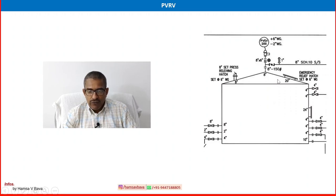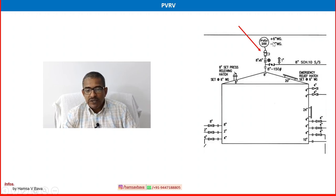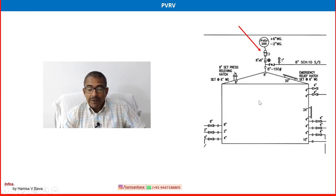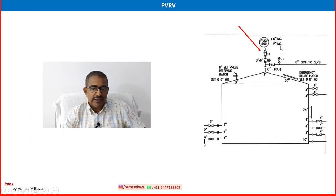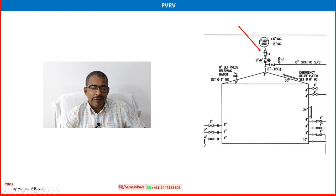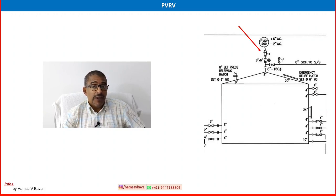Here is a P&ID of a simple storage tank showing a PVSV. Unlike a regular PSV which has only one set point, here you can see two set points: a positive set point of +6 inches water gauge for overpressure protection, and a vacuum set point of −2 inches water gauge for under-pressure protection. The pressures are expressed in inches water gauge because the system operates near atmospheric pressure — very low pressures of around 1–2 PSI. You can refer to your P&ID and visit the field to identify and familiarize yourself with the equipment.